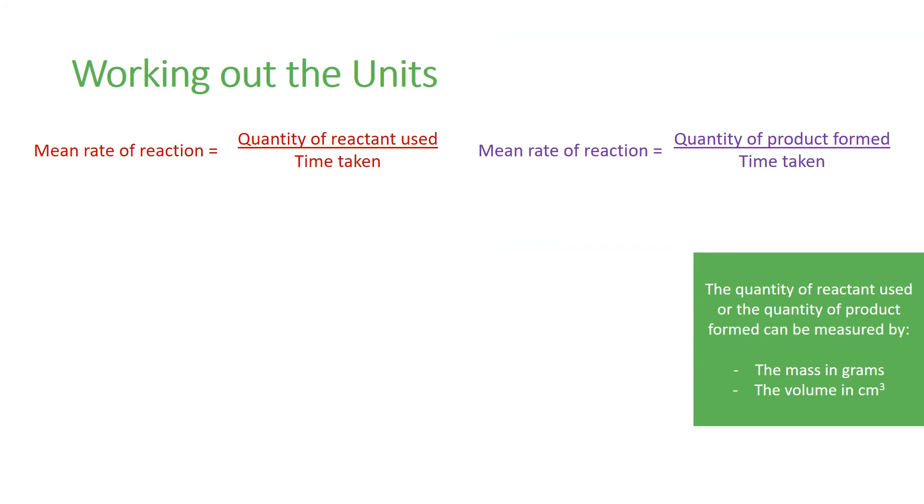The unit for the rate of reactions are easy to work out if you consider the values that you used. If you use the mass, normally measured in grams, and divided by time, usually in seconds, then the unit will be grams per second.